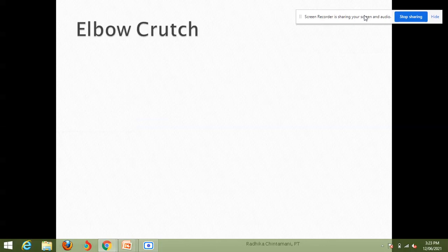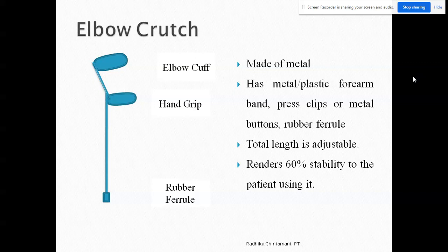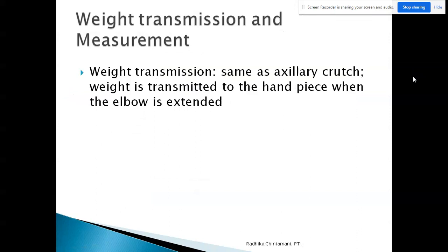The next crutch is the elbow crutch. The parts of the elbow crutch are the elbow cuff, hand grip, and rubber ferrule. The elbow cuff is usually made of metal or plastic forearm band. Press clips or metal buttons are used to adjust the height. The total length is adjustable. The elbow crutch renders 60% of stability to the patient using it.